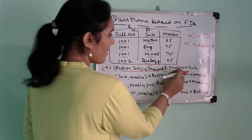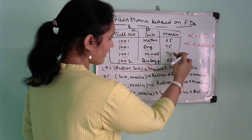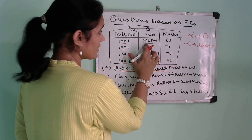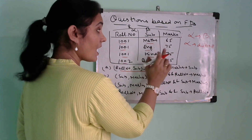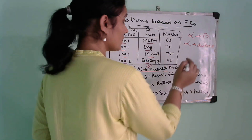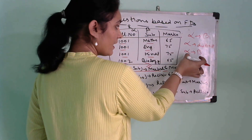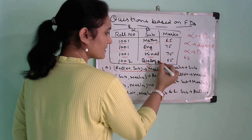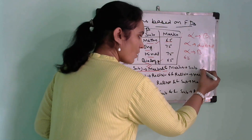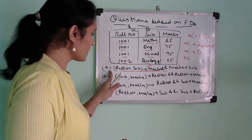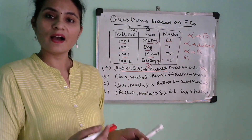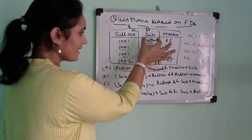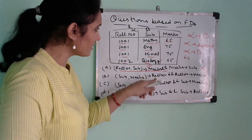Now checking marks to subject: marks are 65, 75, 75, 65 — they repeat. So we need to check manually. 65 maps to Maths once and Biology another time — different beta values for the same alpha. This functional dependency is not valid. So option A is incorrect.